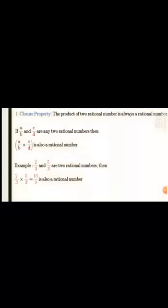The first one is the closure property. The product of two rational numbers is always a rational number — meaning when you multiply two rational numbers you will get a rational number. In the given example, 2 by 3 multiplied with 5 by 3 gives 10 by 9, which is also a rational number.